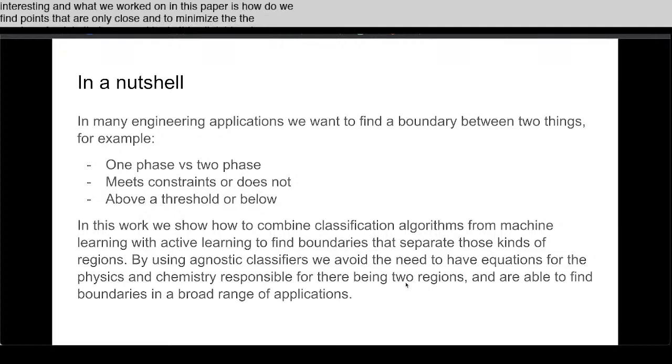For example, you might have a one-phase region or two-phase region as a function of composition and you want to find the boundary that separates them. Or you might want to know what part of the space meets a constraint and what part doesn't so that you can find a dividing line or above a threshold or below.